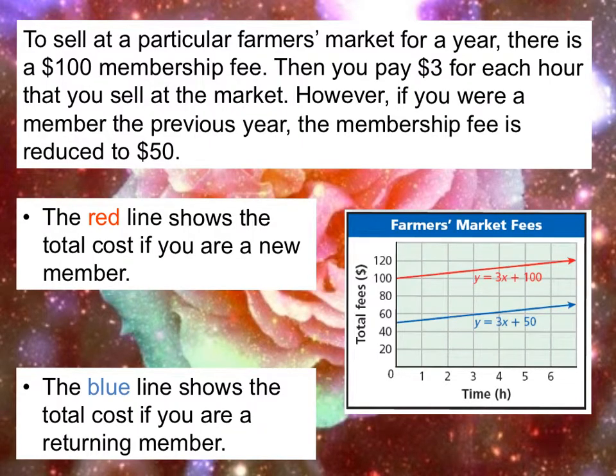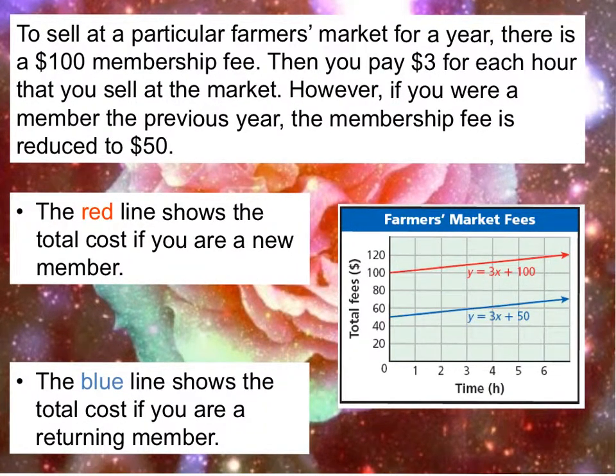Now let's look at an example of some mathematical modeling. Here's a word problem that talks about being at a farmers market. You pay $3 for every hour that you sell at the market. However, if you were a member of the previous year, the membership fee is reduced to $50. Here they give the red line that shows the total cost of a new member and then the blue line shows the total cost of a returning member.